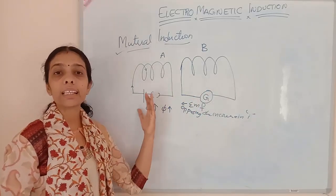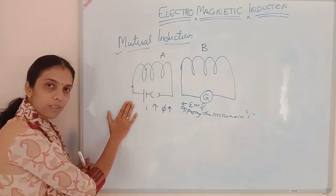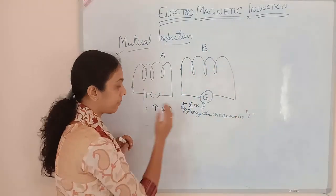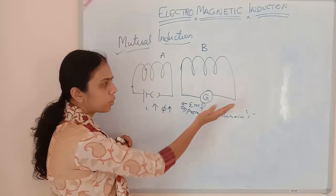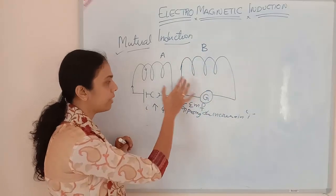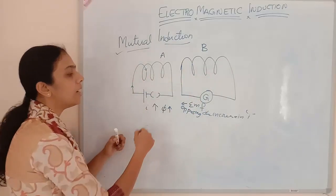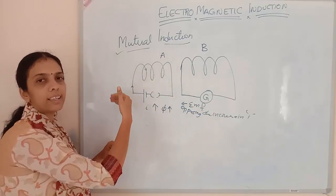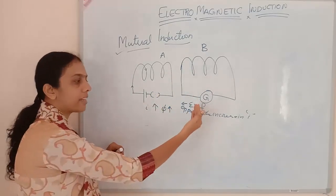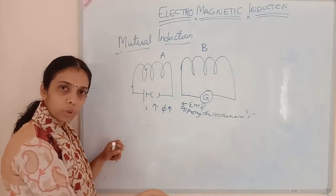When the current is increasing in the first coil, it causes a change in flux, and that change in flux gives an EMF in the other coil. The galvanometer will get deflection when we switch it on, because an EMF is induced in that coil due to the changing magnetic flux linked with the circuit. Similarly, while switching off, the current will be decreasing and an EMF will develop that opposes the decrease in current.